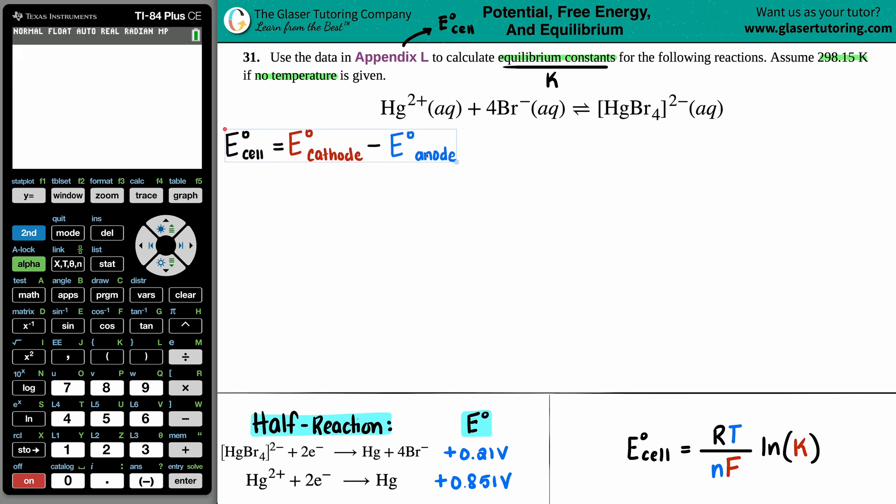This is E cell equals the cell potential of the cathode minus the cell potential of the anode. And just remember that the cathode is always talking about reduction while the anode is always talking about oxidation. Reduction is always gaining electrons and oxidation is always losing them. You could tell that something is undergoing reduction or is at the cathode if your half reaction has electrons on the left side. On the flip side, oxidation or at the anode, your electrons will always be on the right side because that's how you can tell that your electrons are being lost versus being gained at the reduction or the cathode.